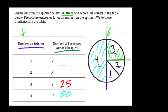The remaining two pieces — regions one and two — look about equal, each half the size of region three. We've accounted for 75 spins so far and there are 25 more left. So it's reasonable to say about 12.5 spins for each of those two categories — 12.5 and 12.5.